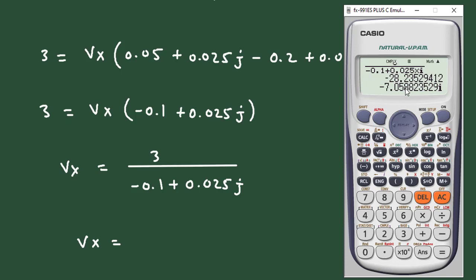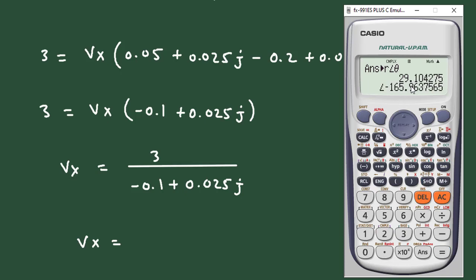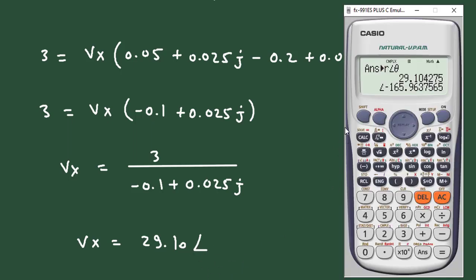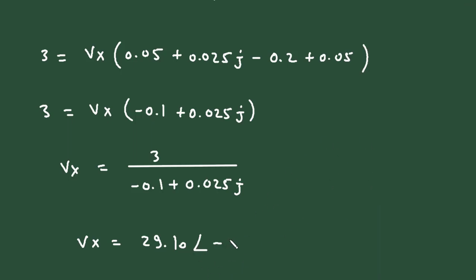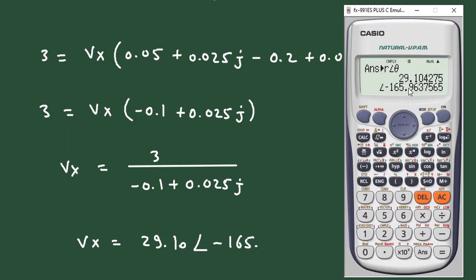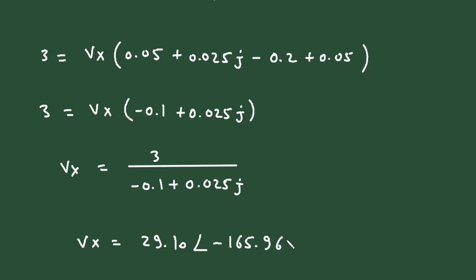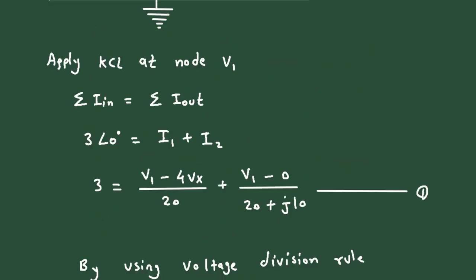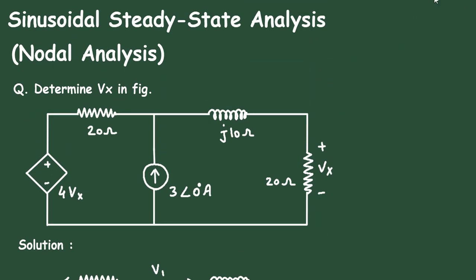In polar form, Vx = 29.10∠−165.96° volts. This is how we can find the value of Vx by using nodal analysis. Don't forget to check out the other videos on this channel — thanks for watching.